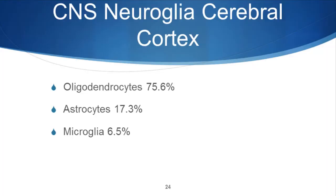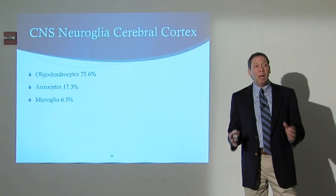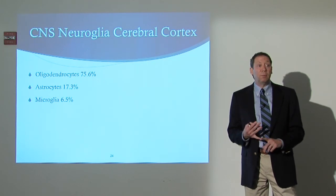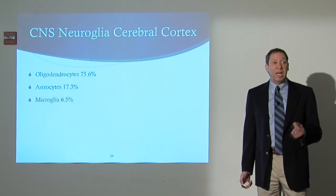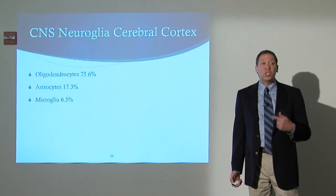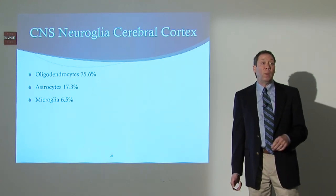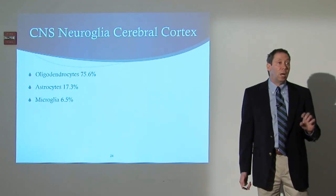Glia are basically made up of three major types. The macroglia are the oligodendrocytes, which constitute about 75 percent of the glia and are responsible for making the myelin sheaths that insulate the nerves. The astrocytes constitute about 17 percent of glia cells. They have a wide range of functions — structural support, creation of the blood-brain barrier, and cleaning up neurotransmitters in the synaptic cleft to prevent overstimulation. They have a very specific regulatory function in terms of neurotransmission.